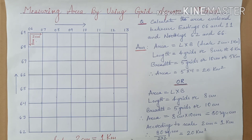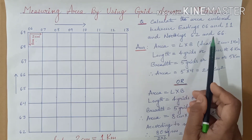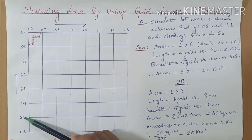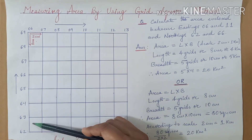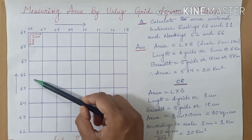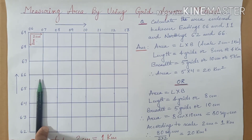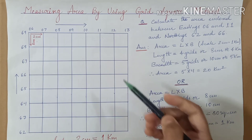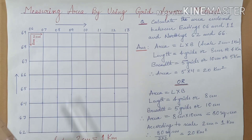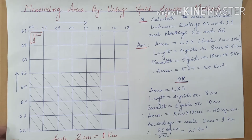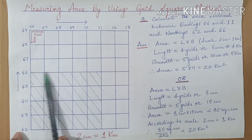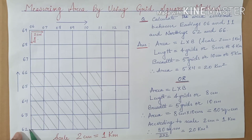Now let us see the northings. The northings are from 62 to 66 — that is 62, 63, 64, 65, 66 — covering 4 grids. So we have 4 grids in the northing direction and 5 grids in the easting direction. The common area marked between easting 6 to 11 and northing 62 to 66 is the region we need to find.